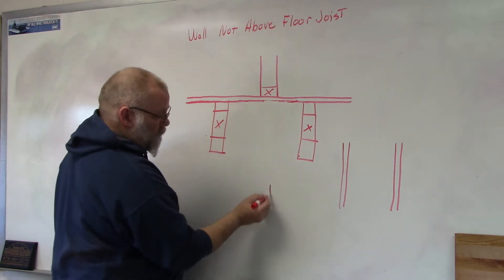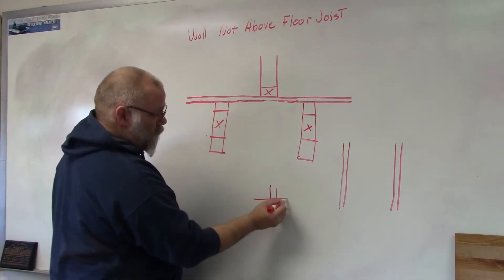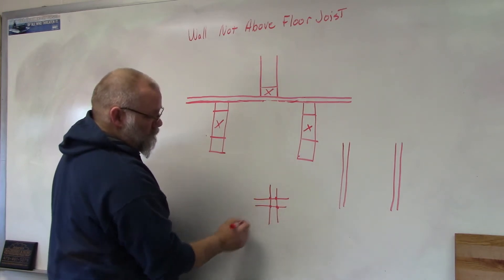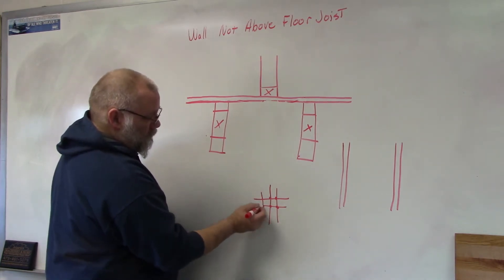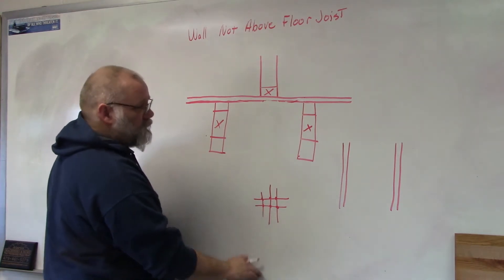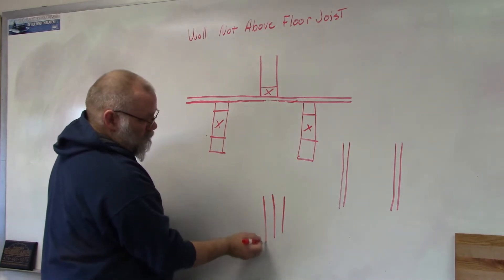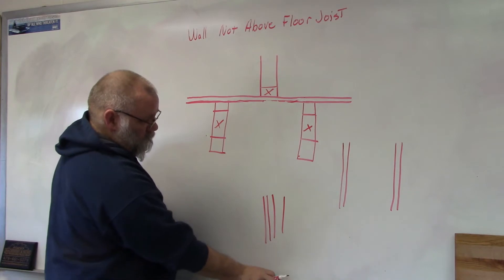Now if your floor joists are going this way and your wall goes this way, it's being supported every time it runs across the top of one of your floor joists. So perpendicular isn't a problem, it's when they run parallel and then you have a wall that runs between the two.